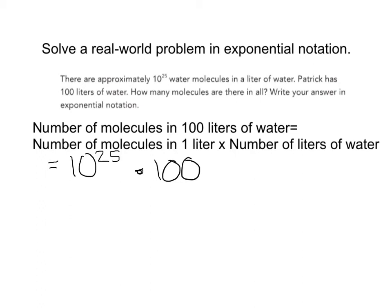Now, how do we write 100 in exponential notation? We can write this as 10 to the 2nd, because 10 times 10 gives you 100.